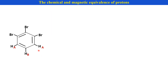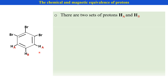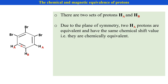Let us see the example. In this case, there are two sets of protons: HA proton and HB proton. There is coupling between non-equivalent protons, that is coupling between HA and HB. Due to the plane of symmetry, HA protons are chemically equivalent.